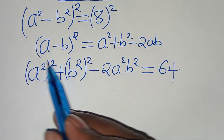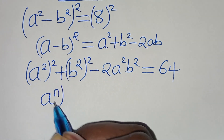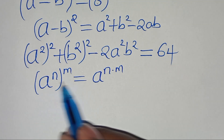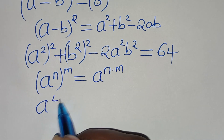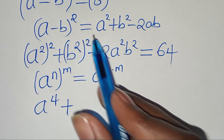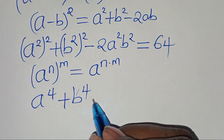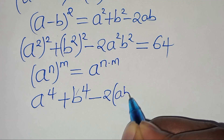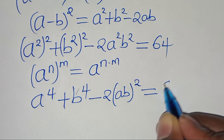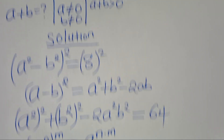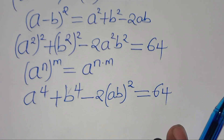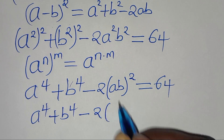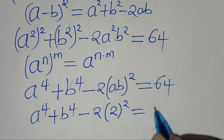Now, a to the power of 2 raised to the power of 2 is in the form of a to the power of n raised to the power of m, which we express as a to the power of n times m. Applying this exponent property, we get a to the power of 4 plus b to the power of 4 minus 2(ab) squared equals 64. From equation 2, ab equals 2, so substituting: a to the power of 4 plus b to the power of 4 minus 2 times 2 squared equals 64.